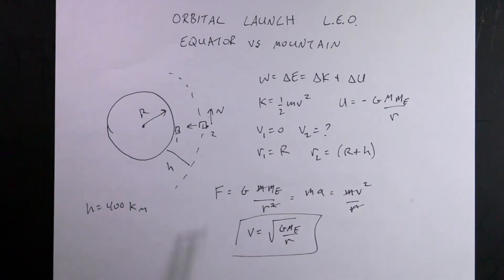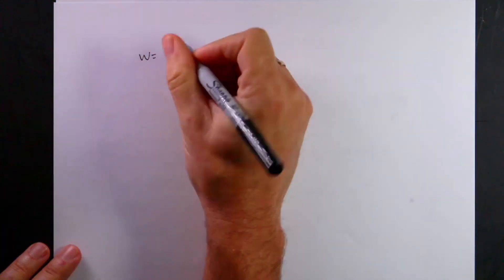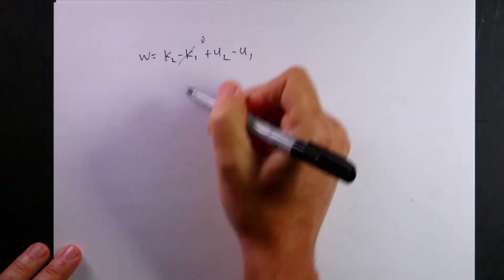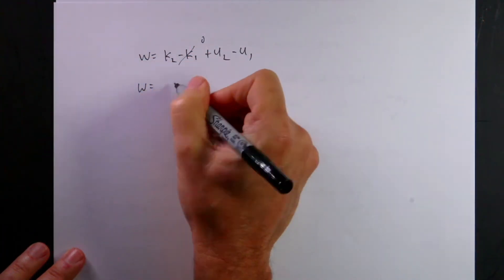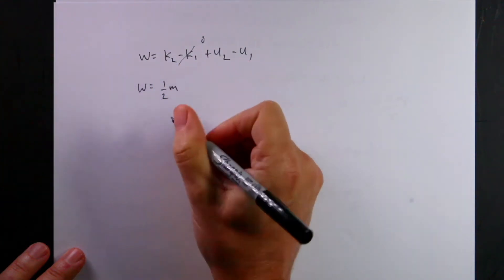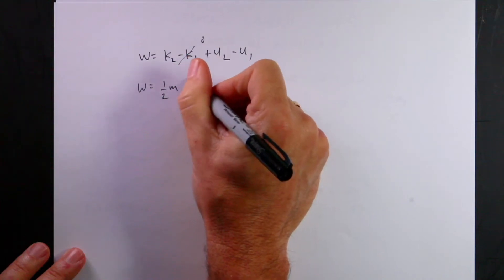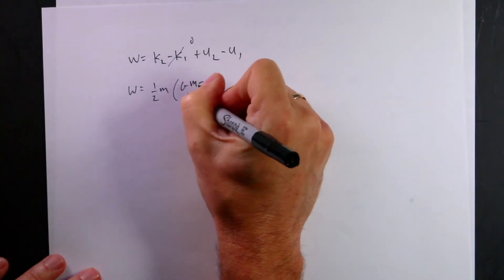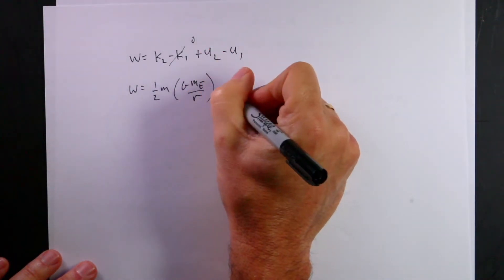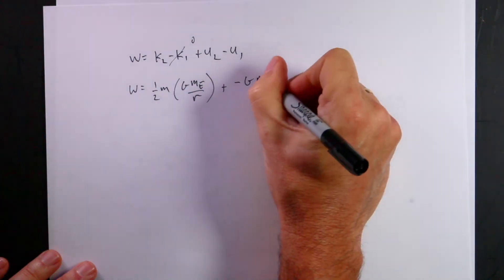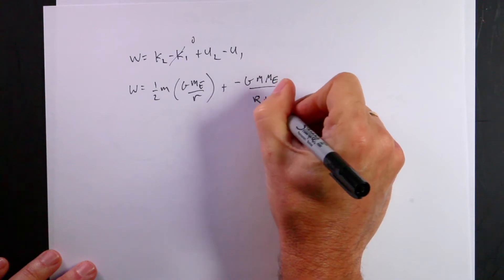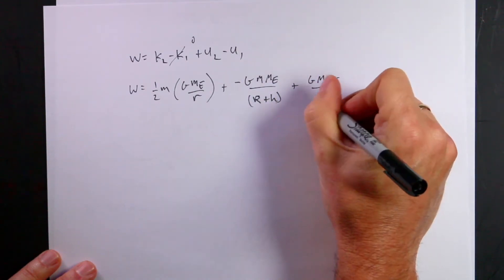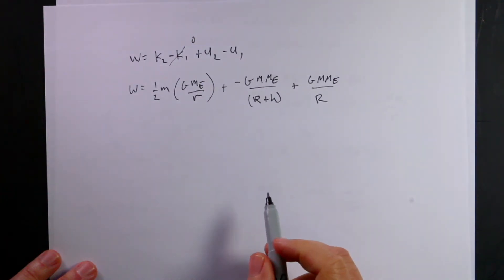Okay, so I'm going to write it all out. Work equals K2 minus K1 plus U2 minus U1. K1 is zero, so work equals one-half m times (G·ME/r) — that's v2 squared — plus U2 minus U1, which is negative G·m·ME over (r+h), minus negative G·m·ME over r. So that's the work done to get it into orbit. This is Work 1.